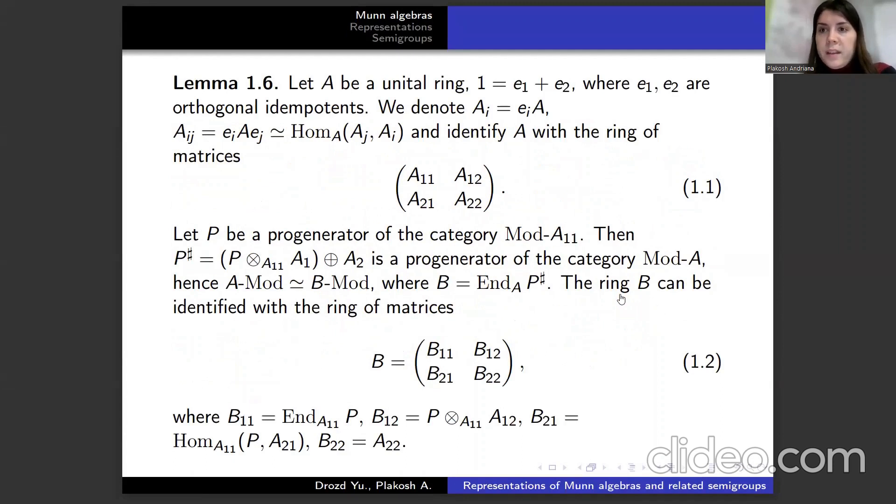Let us formulate a lemma. Let A be a unital ring and 1 is the sum of E₁ and E₂, where E₁ and E₂ are orthogonal idempotents. We denote Aᵢⱼ as follows and identify A with the ring of matrices. Let P be a progenerator of the category mod-A₁₁. Then P# is a progenerator of the category mod-A. Hence, A-mod is isomorphic to B-mod.